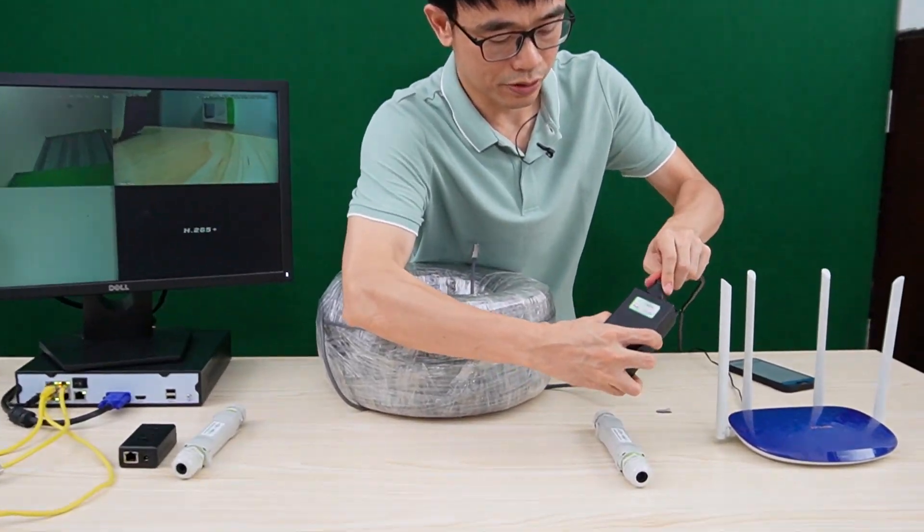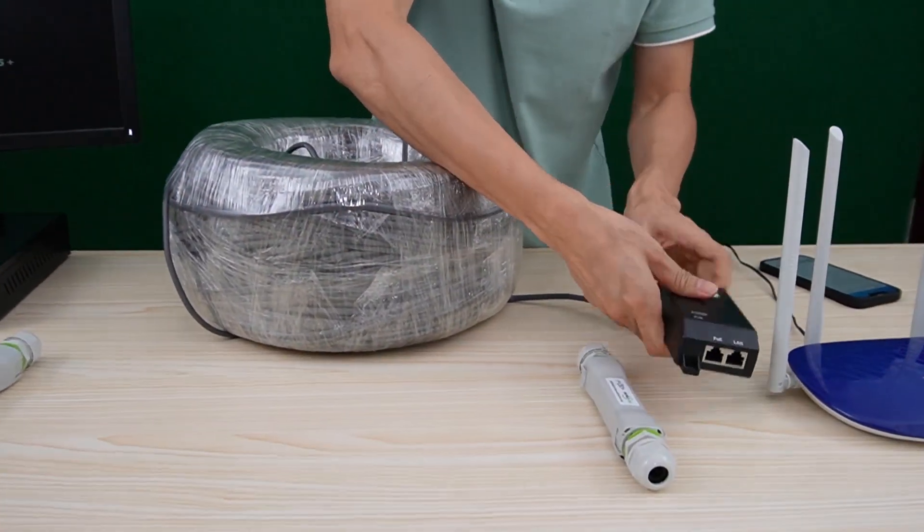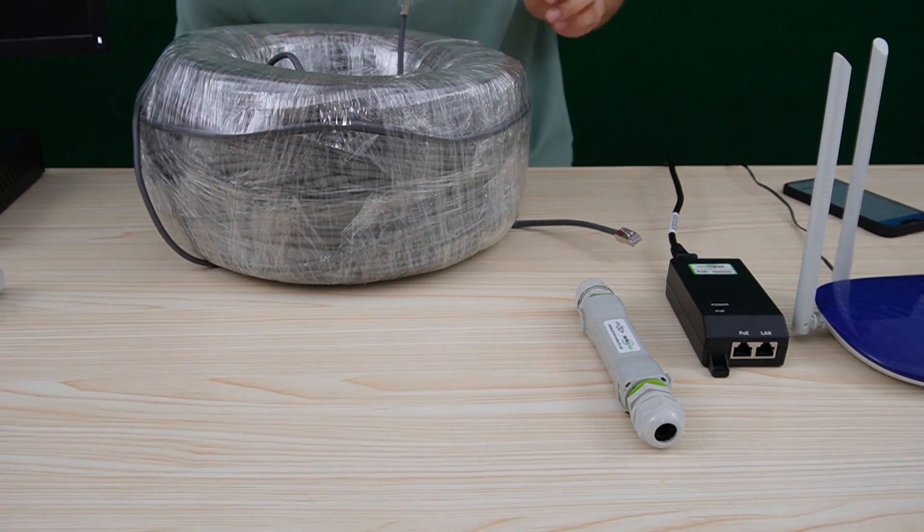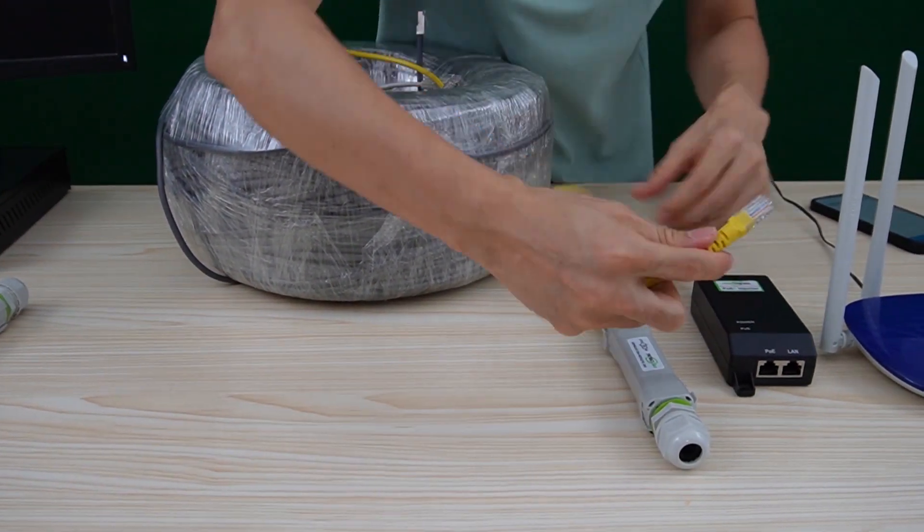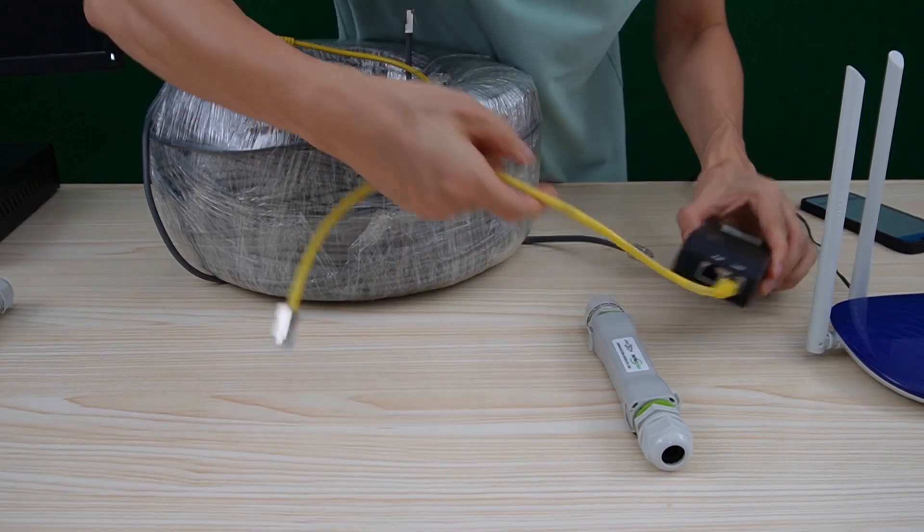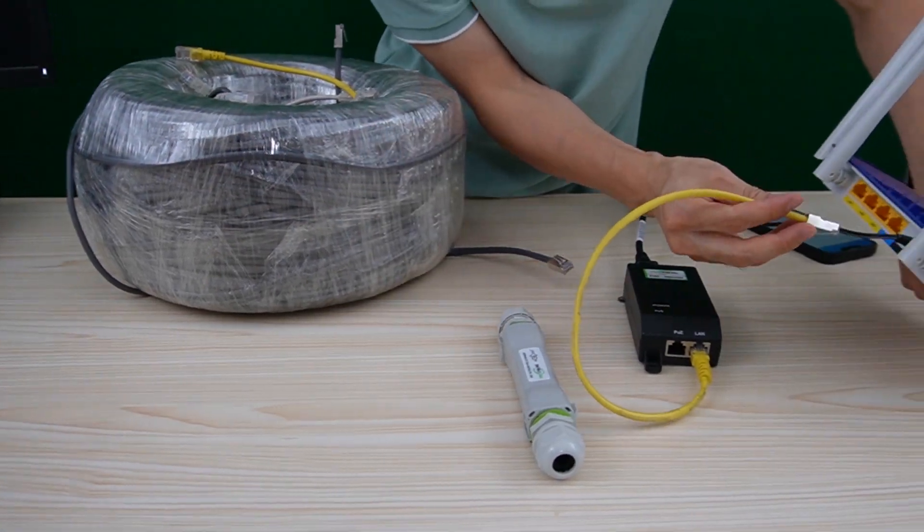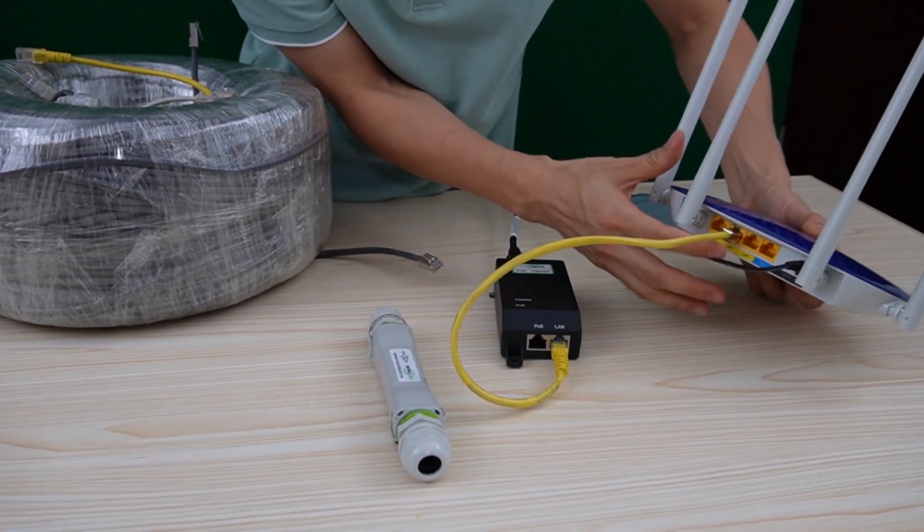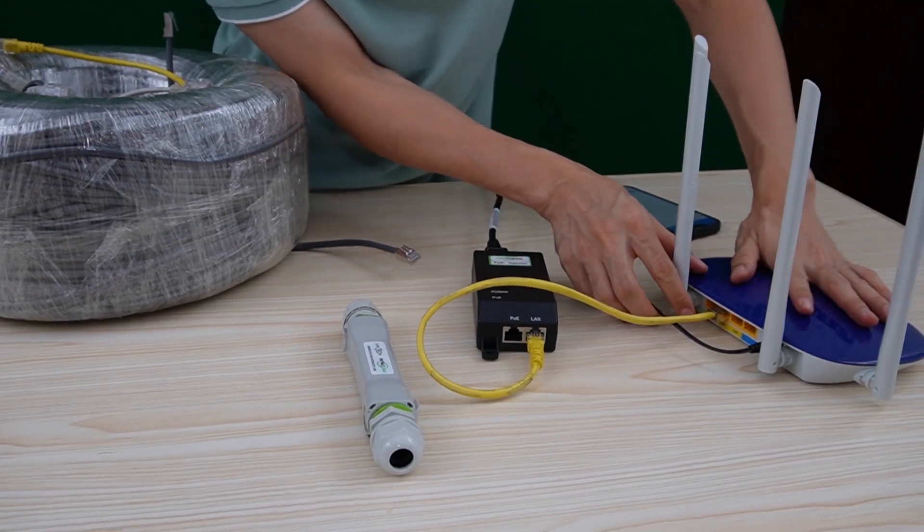First, connect the PoE injector. And we need some patch cord. Now just use the short patch cord to link the LAN port to the router, so it's easy to understand. So the injector will have the data from the router.